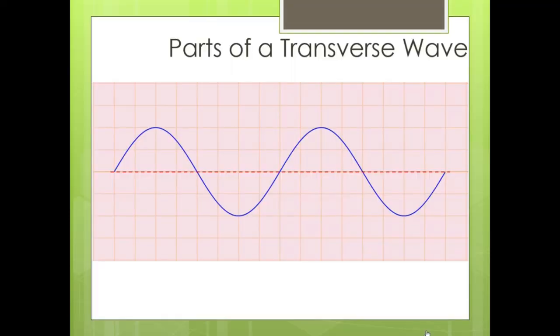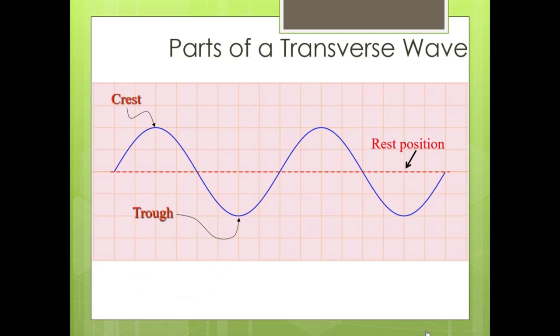Here's a basic picture of a wave. The blue line represents the medium — the material, such as water or a string. The red dashed line is our rest position, where the water would be before being disturbed. We're seeing the actual shape of the wave as the energy is transmitted. The high points are called a crest, the low points a trough, and the maximum displacement from the rest position to the crest or trough is known as the amplitude, which is related to the amount of energy contained in the wave.